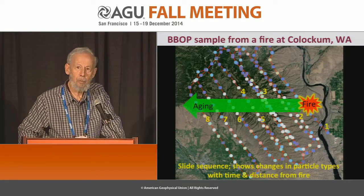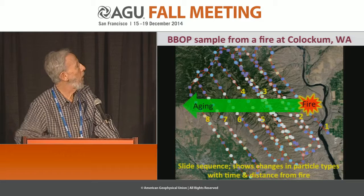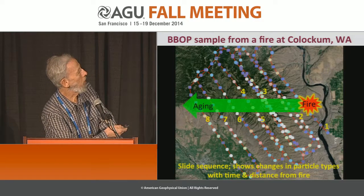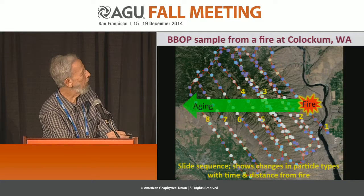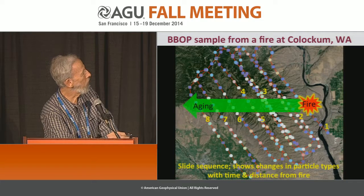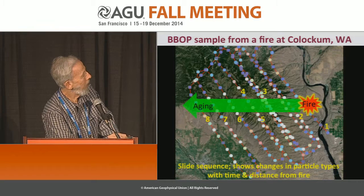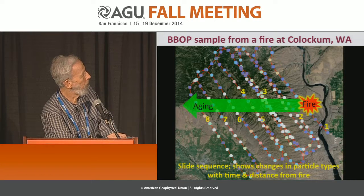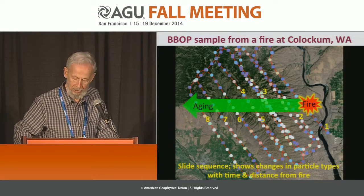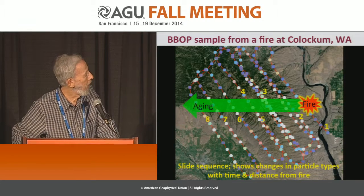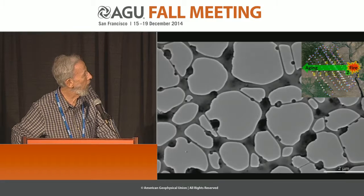The prior two talks discussed the Colocum-Tarps fire. This is the same picture as the previous ones — these are places where sampling was done, and here's the fire. I'm going to show you images now. This is outside the fire. I'll start from samples 2, 3, 4, 5, 6, 7, and 8, and you'll see the change in appearance of the aerosol particles.